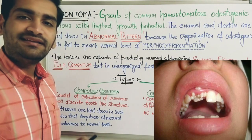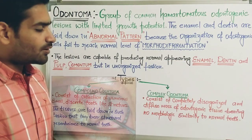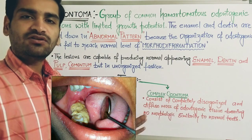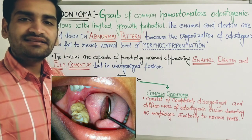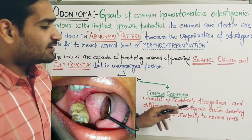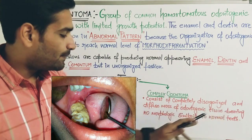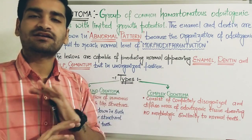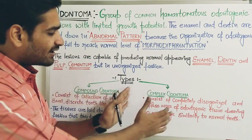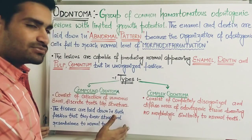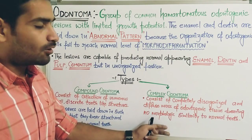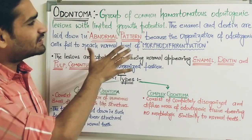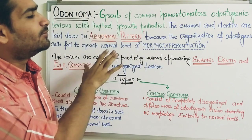Complex odontoma consists of a completely disorganized and diffuse mass of odontogenic tissues. There is no regular organization — enamel and dentine are laid down in a completely disorganized mass of odontogenic tissue bearing no morphological similarity with normal teeth. So compound odontoma has some structural morphology similar to teeth, but complex odontoma doesn't have any morphological similarity to the normal tooth structure.